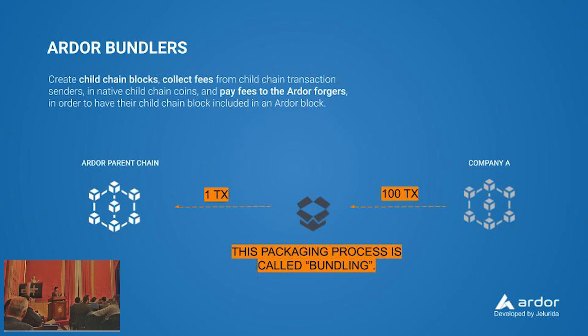Bundlers accept the fees from those child chain transactions in the corresponding child chain coin and then they pay fees in Ardor to the parent chain. This way the parent chain stays very light because its only functionality is the consensus, and the child chain transactions are validated by the public network of this parent chain. This packaging process is called bundling.